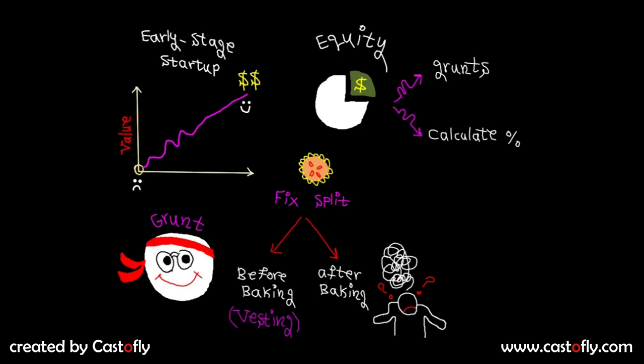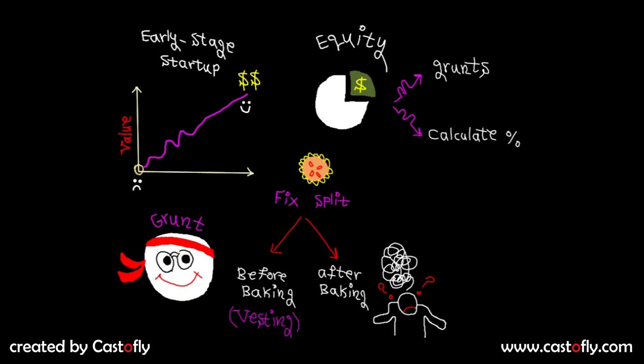The other modern way to split the pie is called dynamic split, in which you get pie as you contribute to the company, and it's super useful for early stage startups who are trying to go through the gap. I will talk about how to create dynamic split and how it works in the next lectures.